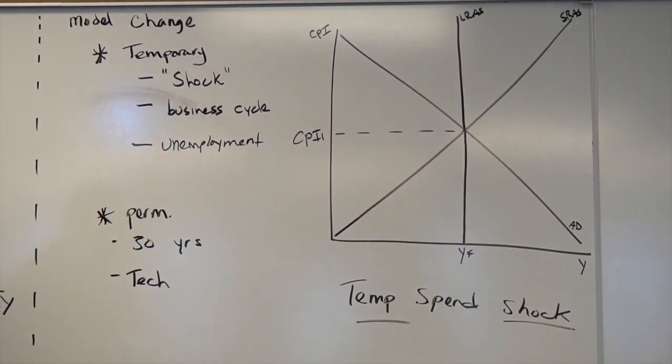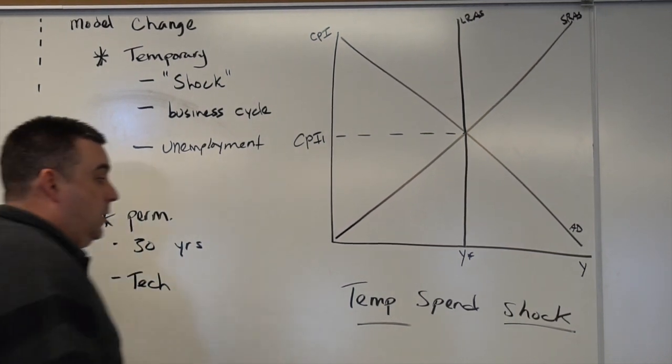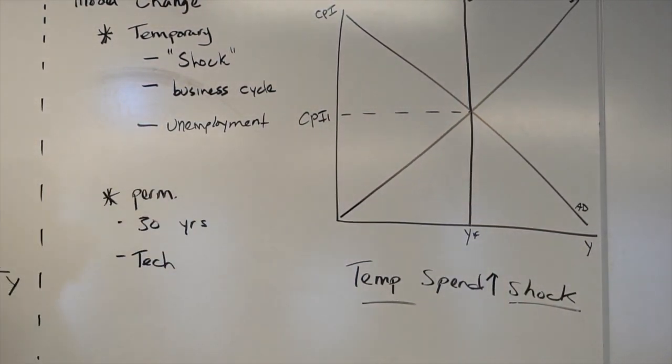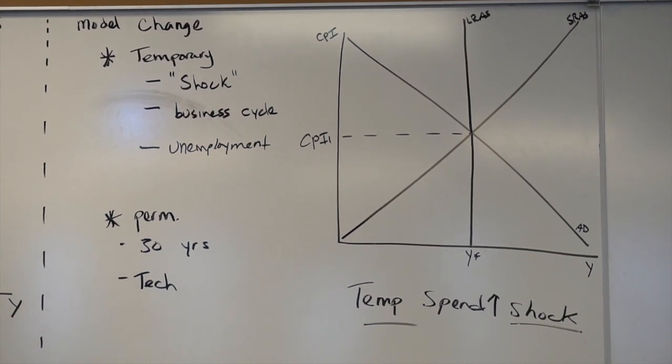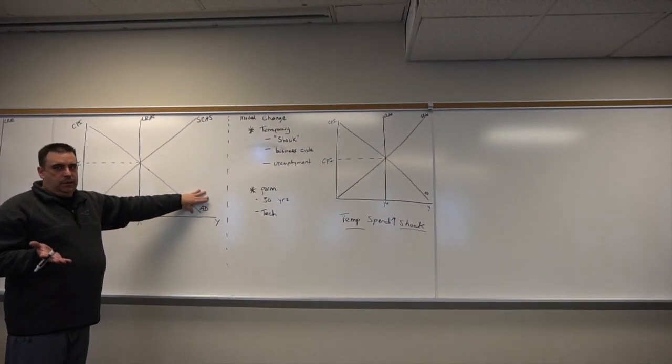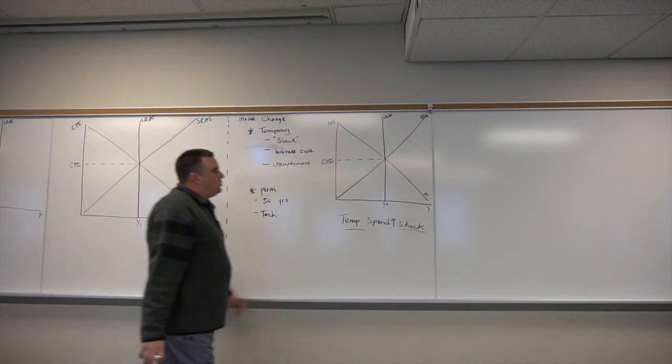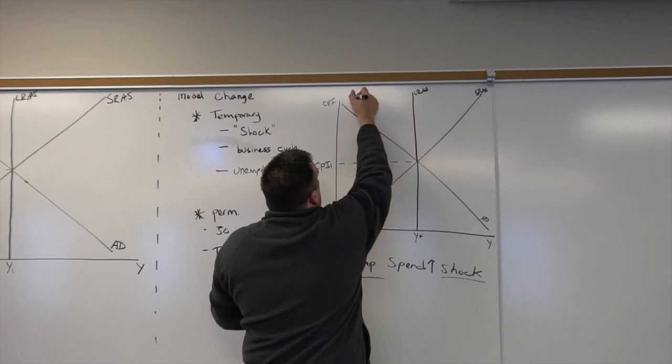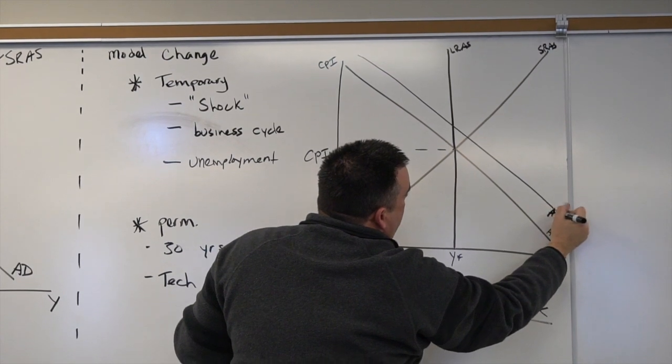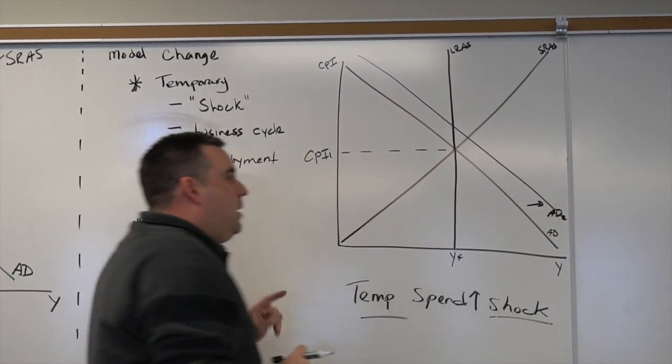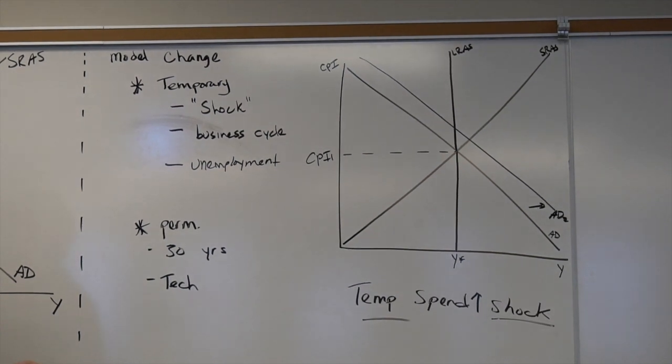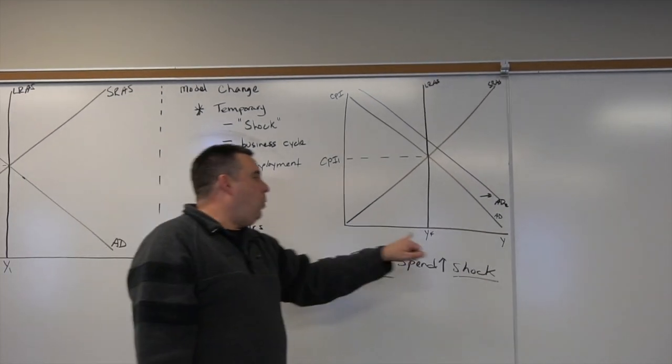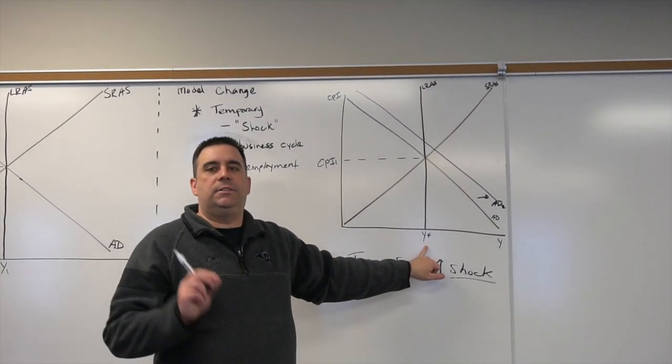A temporary spending shock—I guess I have to say what it did. We increased spending. A temporary increase in spending shock. We said we probably want to capture spending most likely with our aggregate demand. It's going to be temporary, so I'm only going to shift aggregate demand. I will not shift my long run function. I would have some new AD2 curve right here.